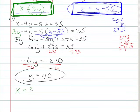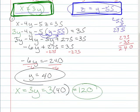So I got x equals 3y, and I happen to know what y is. Y is 40, right? So 3 times 40 is 120. So I got that one. X is 120.